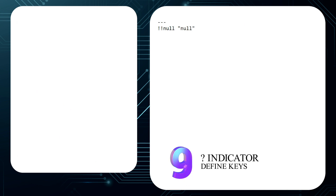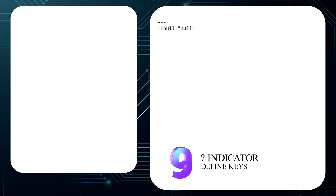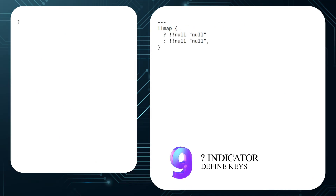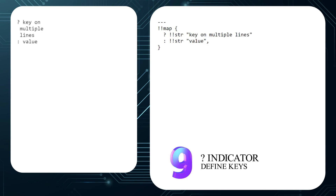Number 9: You can use a question mark to denote a key in a key-value pair. This can be useful when the key is null or the first character is a dash, square bracket, or other character that without quotes would lead to ambiguity. Using a question mark also allows the key to span multiple lines. When using a question mark, the colon must be on a separate line.